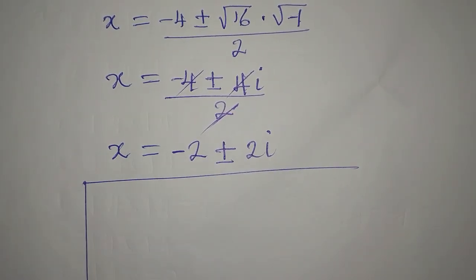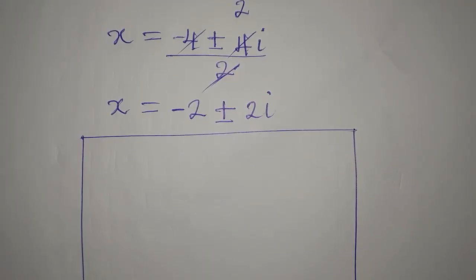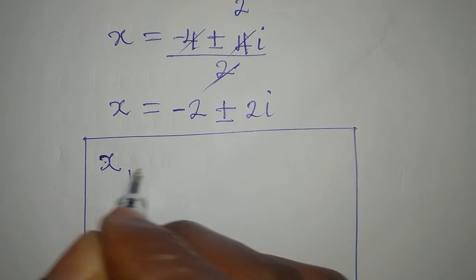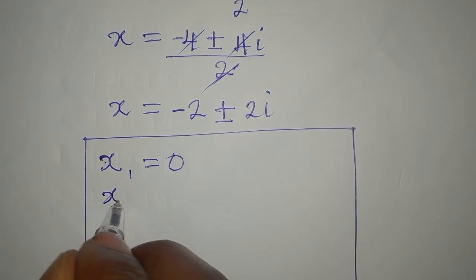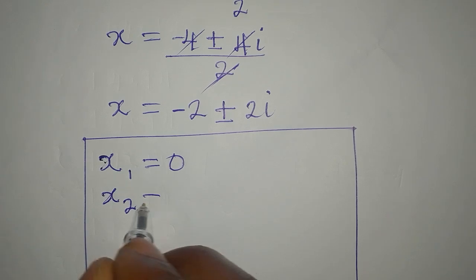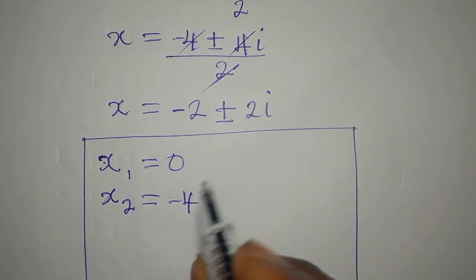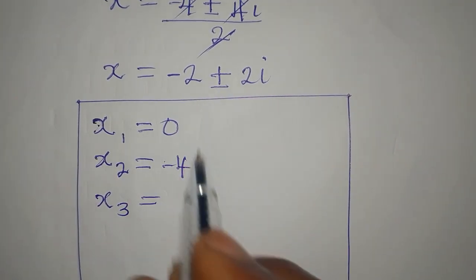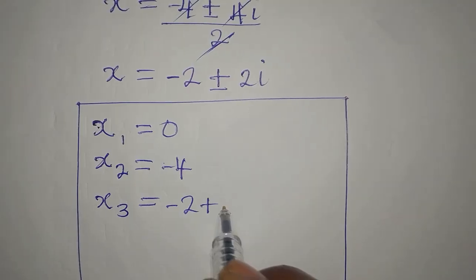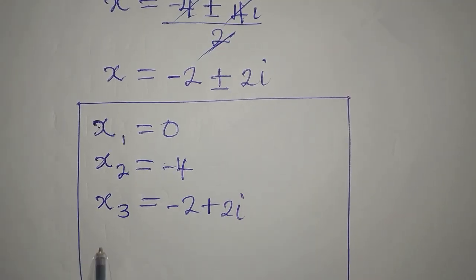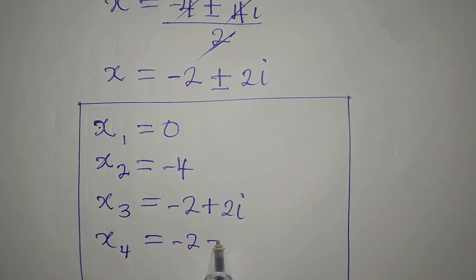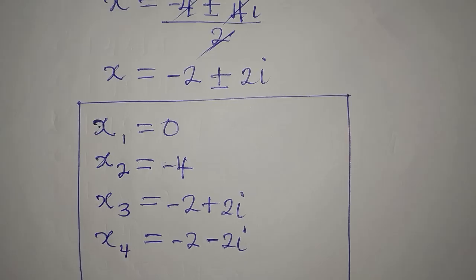This is a 2-in-1 solution. Let's get all four solutions together. We have x1 equals 0, x2 equals negative 4, x3 equals minus 2 plus 2i, and x4 equals minus 2 minus 2i. So these are the four solutions to the equation.